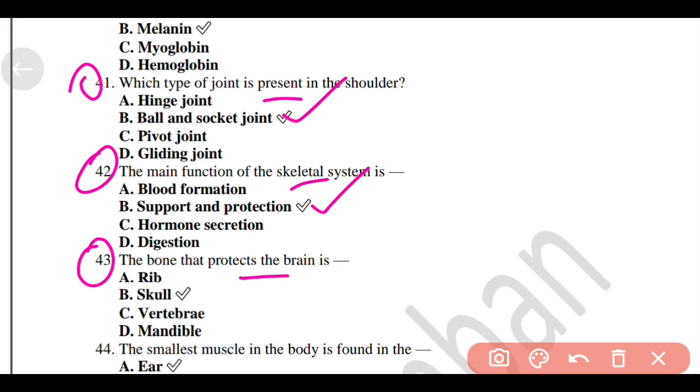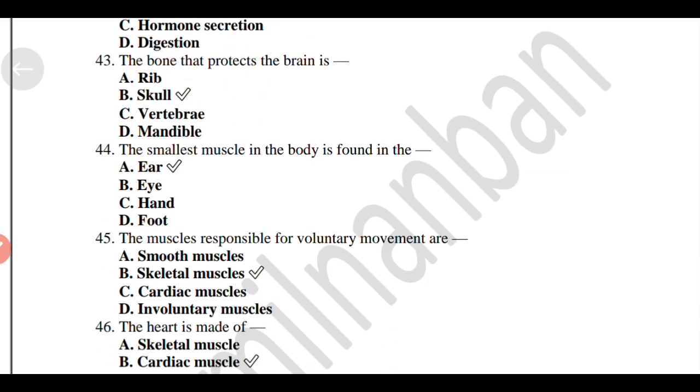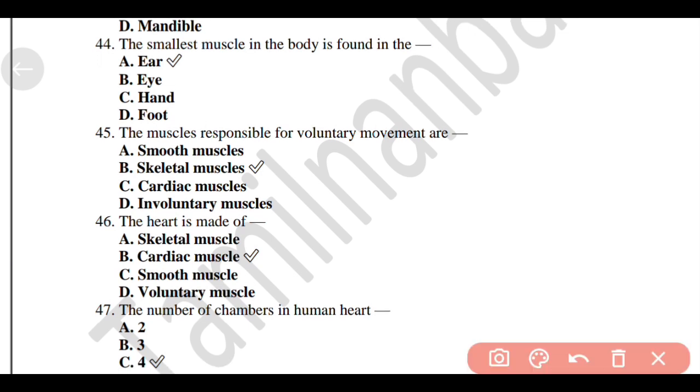The bone that protects the brain is option B, Skull. The smallest muscle in the body is found in the ear.